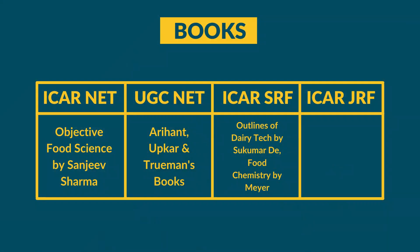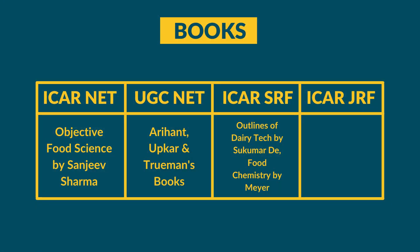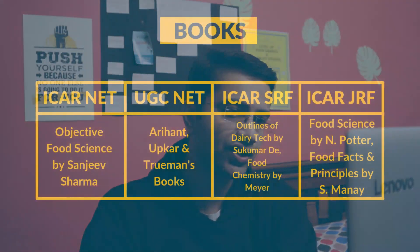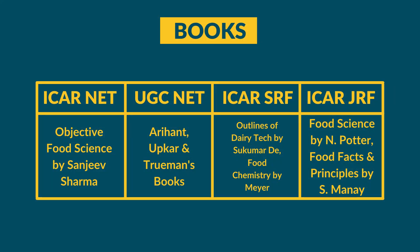For ICER-SRF, refer to Outlines of Dairy Technology by Sukumar De, Food Chemistry by Meyer, and for food technology basics — Food Science by Norman Potter, Food Facts and Principles by Manay, and Objective Food Science by Sanjeev Kumar Sharma, which also includes past year question papers. For ICER-JRF, the same core books — Food Science by Norman Potter, Food Facts and Principles by Shakuntala Manay, and Objective Food Science by Sanjeev Kumar Sharma — are extremely helpful.